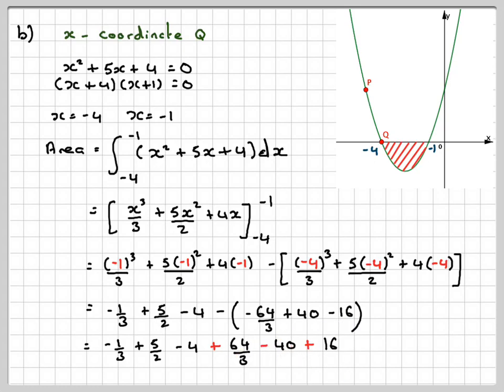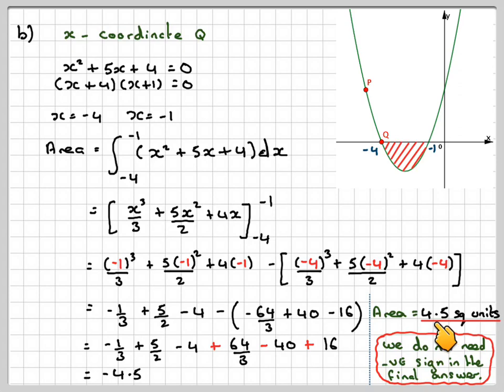Take your calculator out and use the fraction button and you'll get minus 4.5. Now, you can't give the answer of minus 4.5 because the question asks for the area. The minus sign just tells us that the area is below the x-axis. So we have to say that the area is 4.5 square units.